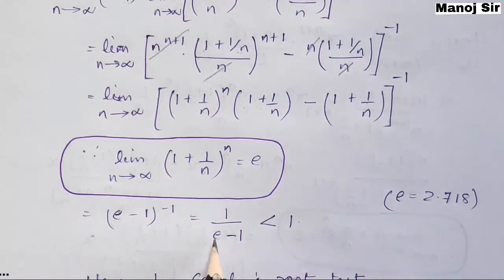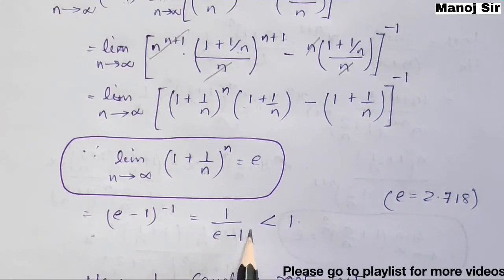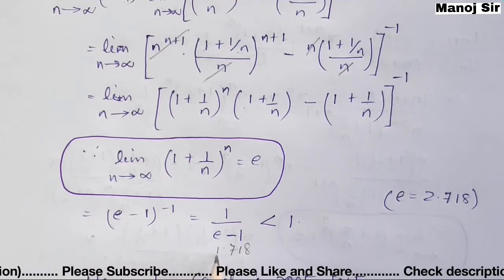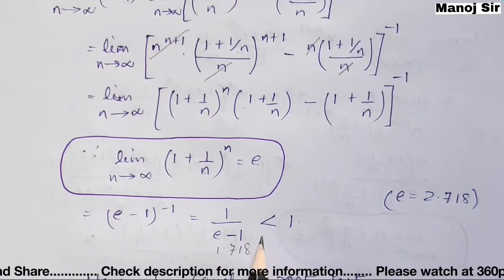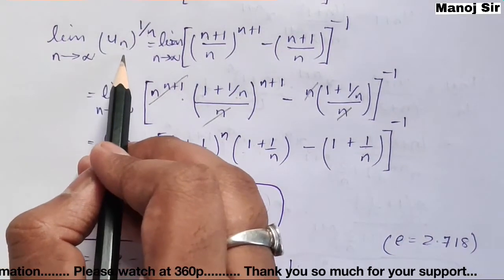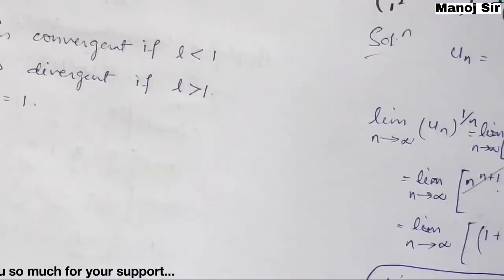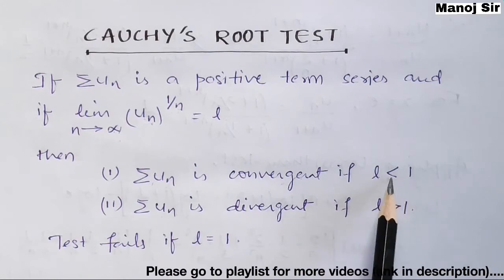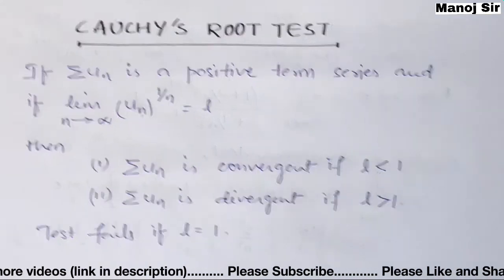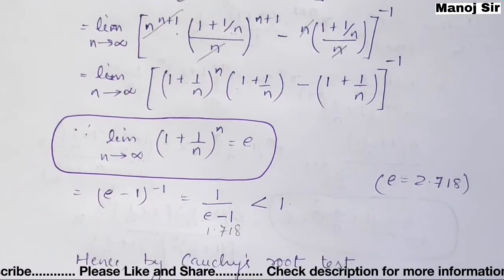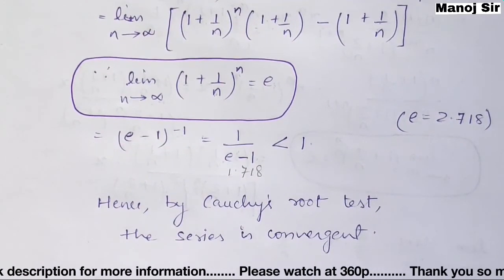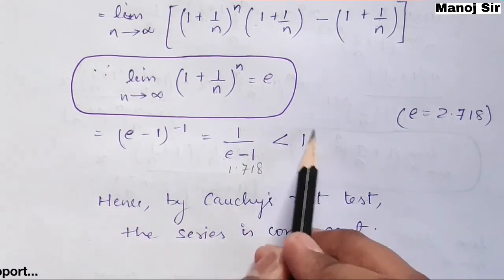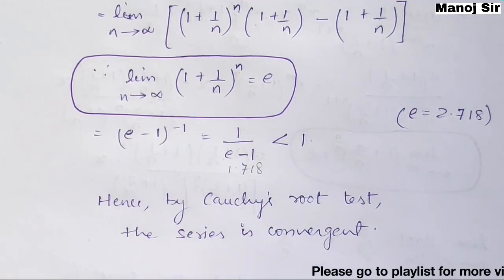Substituting e = 2.718, we get 1/(2.718 − 1) = 1/1.718, which is obviously less than 1. So the value of the limit n tends to infinity of u_n^(1/n) comes out to be less than 1. Hence, by Cauchy's Root test, the series is convergent. Thank you so much for watching this video.